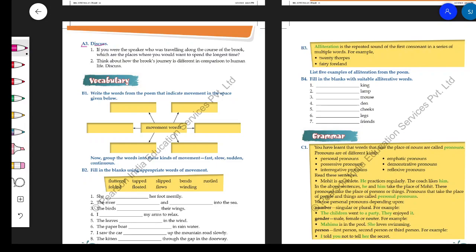Now, next topic is—the next thing is, think about how the brook's journey is different in comparison to human life. Discuss. Well, see, the brook's journey is in a way—in a way, mirrors the human's and also contrasts against it.